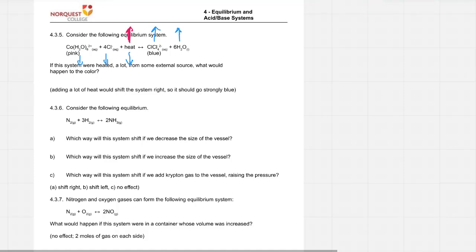Which way will the system shift if we add krypton gas to the vessel, raising the pressure? Pressure changes don't actually affect what an equilibrium system does. It kind of feels like they should to me, I've always thought, but a pressure change won't do anything. And the reason they say krypton gas is because that's a noble gas, meaning it won't react with any of these things. So this is not a trick where this will react with nitrogen and pull it out of the system. The only thing this does is raise the pressure. So the answer is shouldn't do anything.